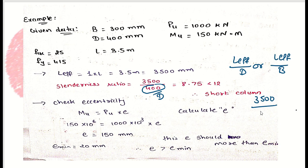For the least lateral dimension: 3500 / 300 = 11.6, which is also less than 12. Therefore, we can design this column as a short column.